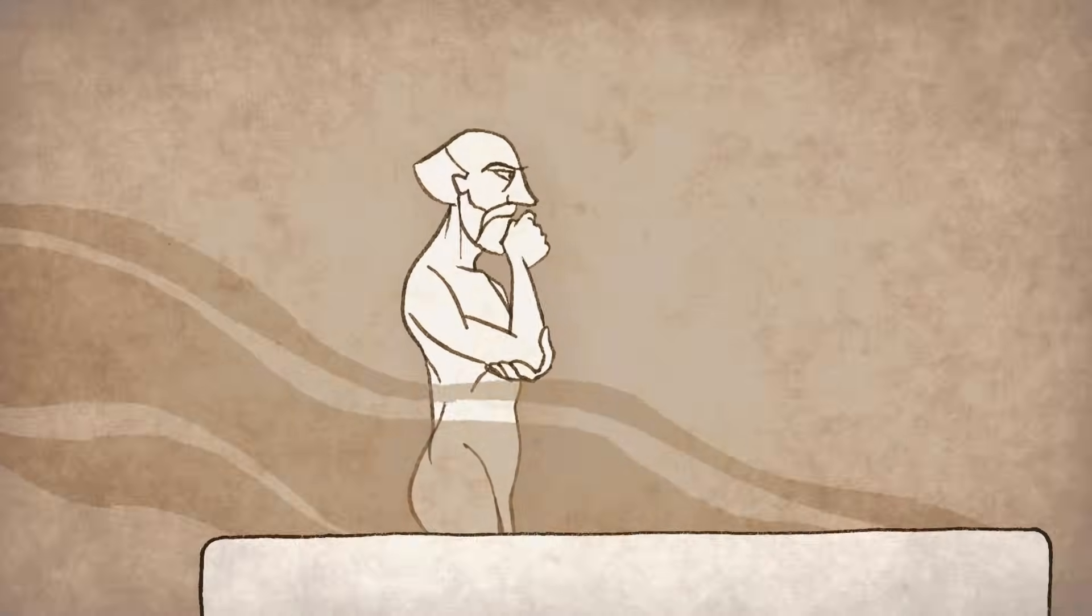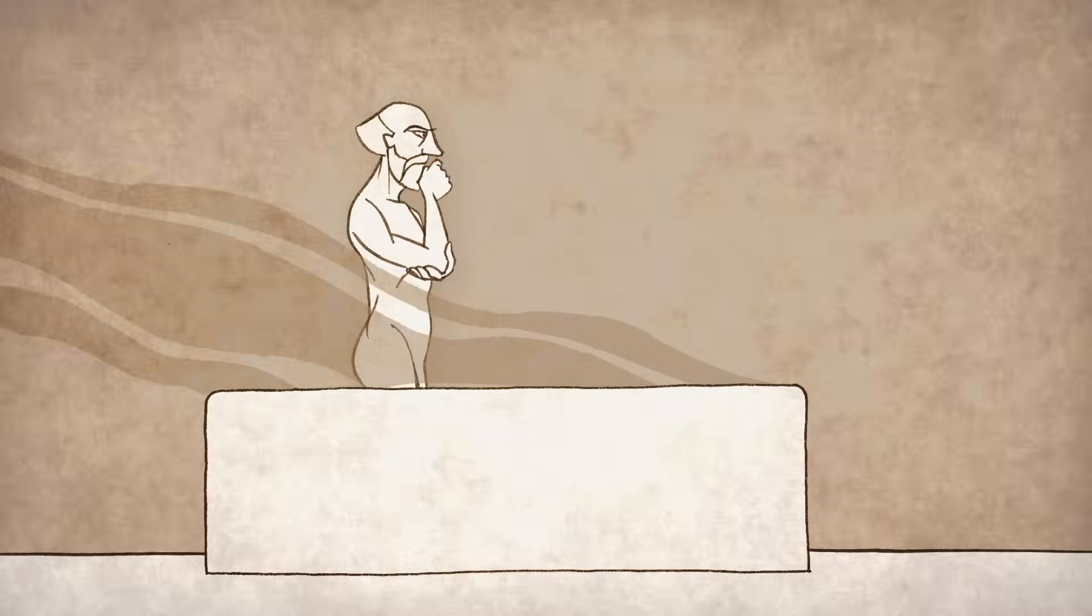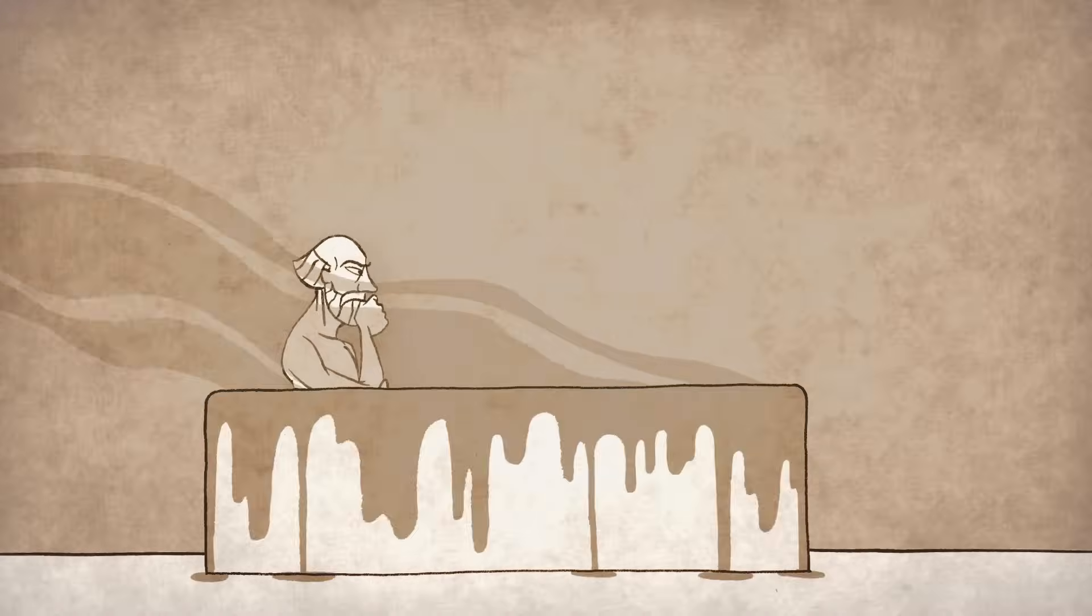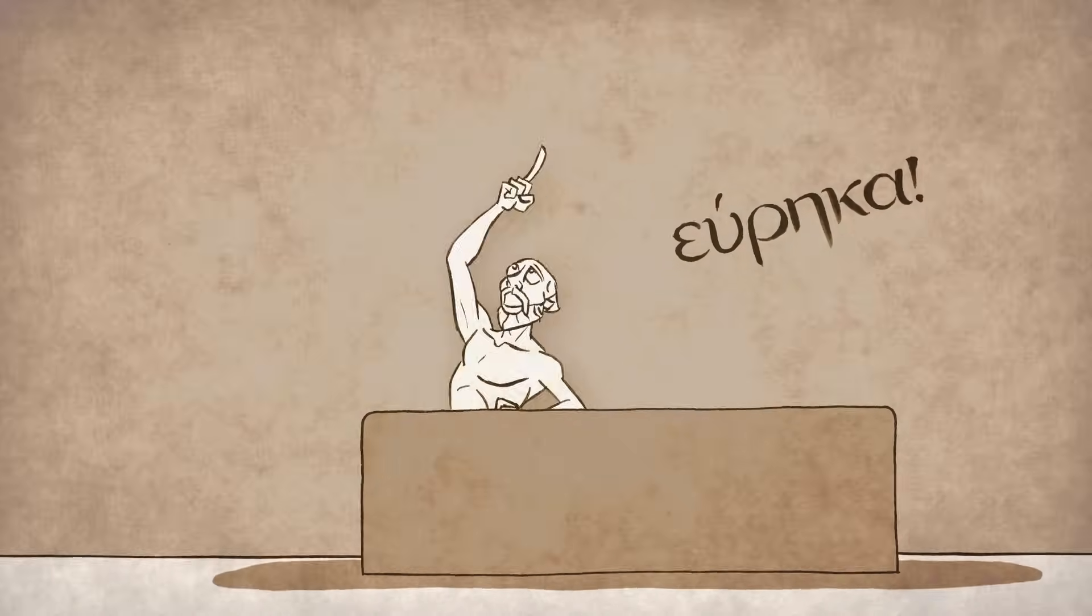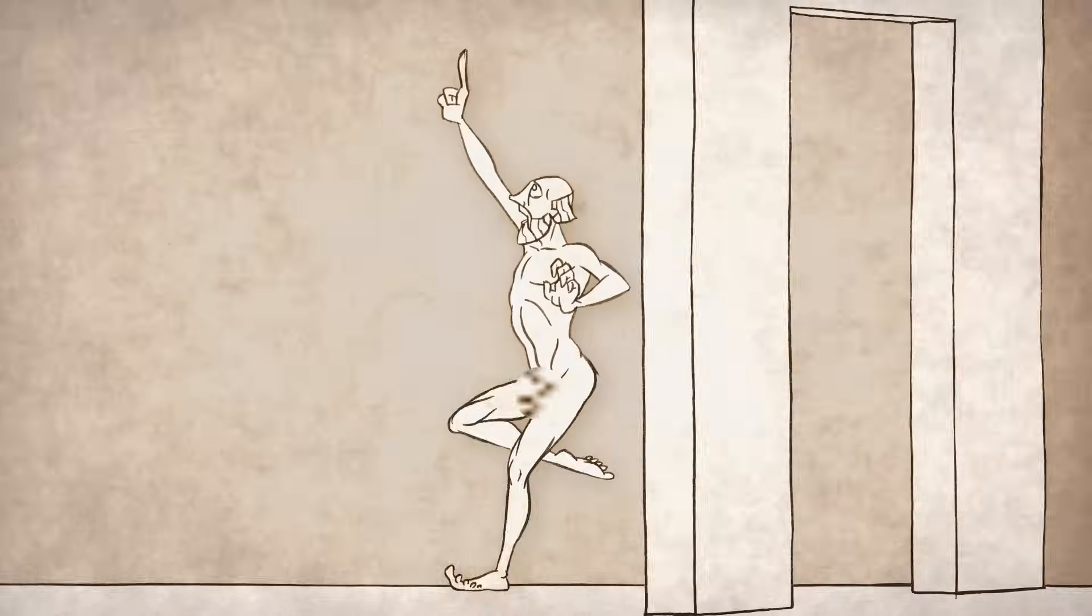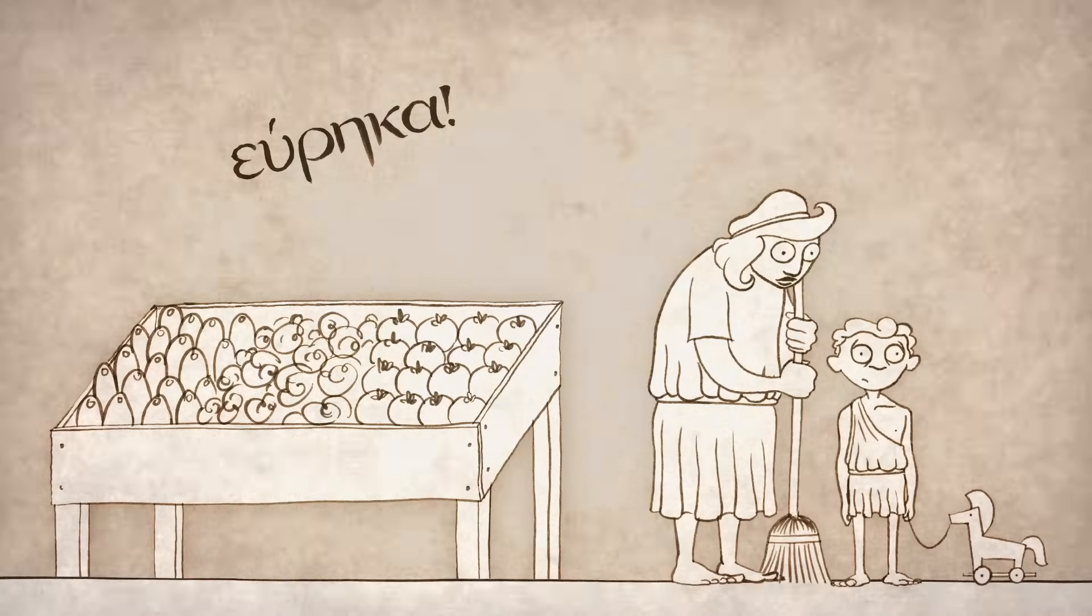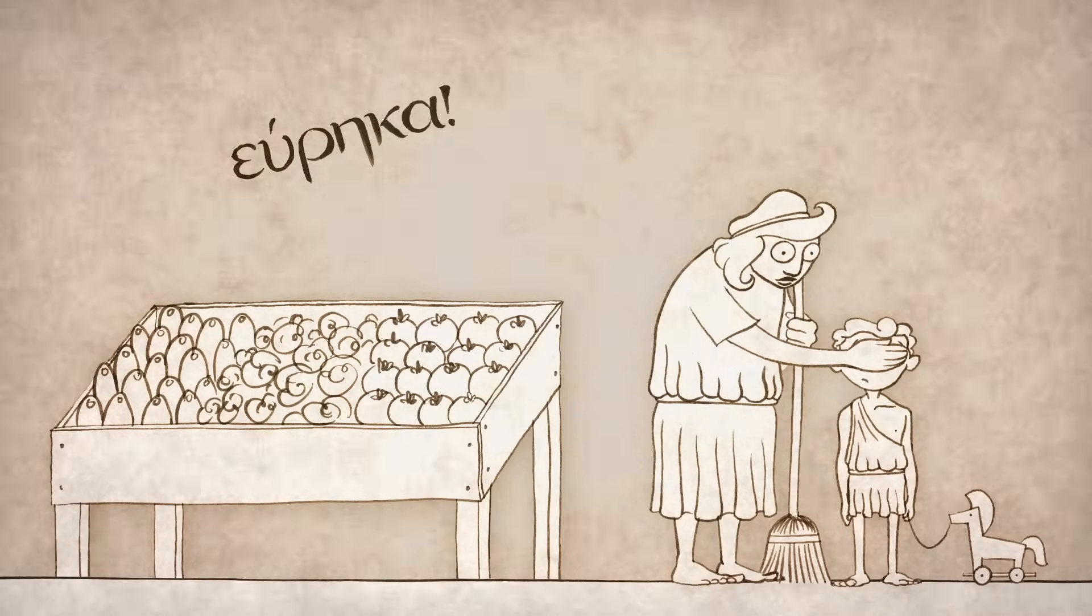One day, while taking his bath, Archimedes noticed that the water level in the bathtub rose and overflowed as he immersed himself into the tub. He suddenly realized that how much water was displaced depended on how much of his body was immersed. This discovery excited him so much that he jumped out of the tub and ran through the streets naked, shouting 'Eureka,' which comes from the ancient Greek meaning 'I found it.'